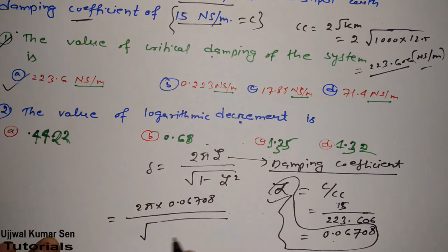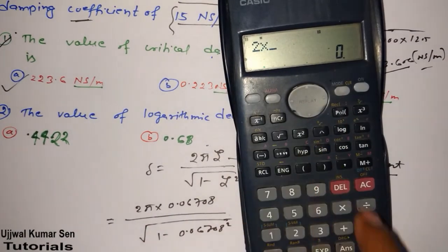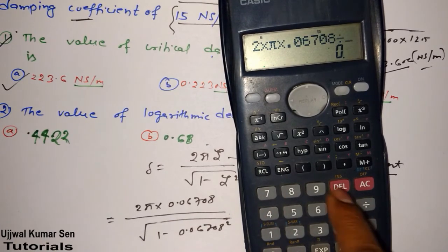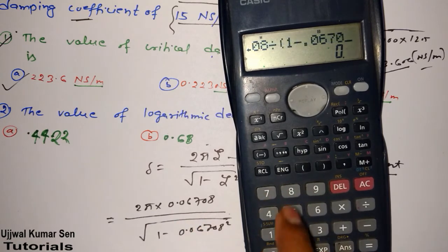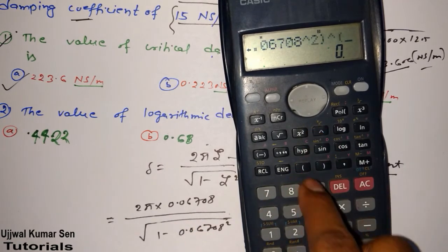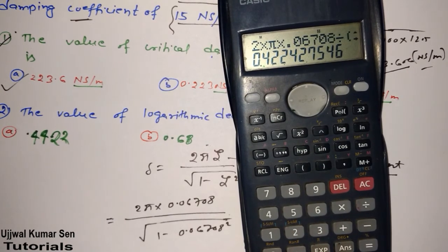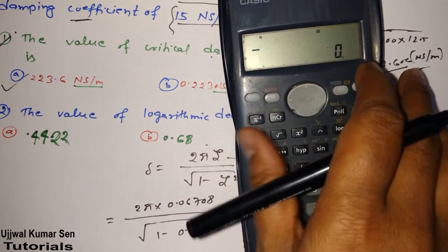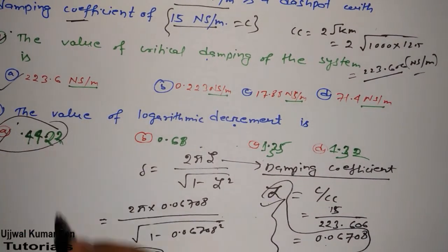So 2π × 0.06708. One more thing I would like to share with you. Just let me do little calculation. Then I will share with you. Yeah. So 2 × π × 0.06708, divided by √(1 - 0.06708²). So answer I am getting here 0.422, okay? 0.422. That's cool. No problem. So the answer is not exactly here. So A is the right option.